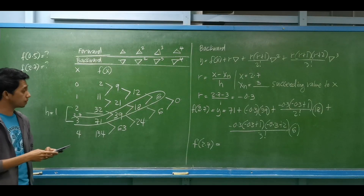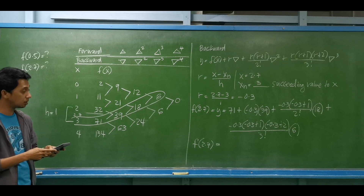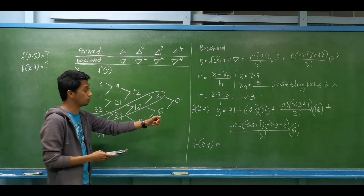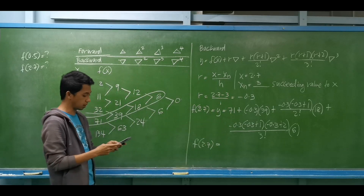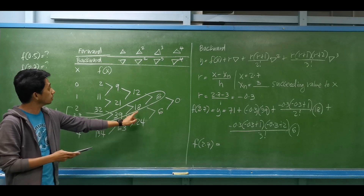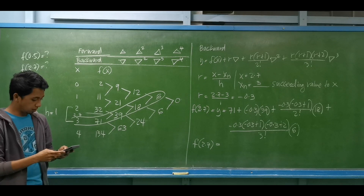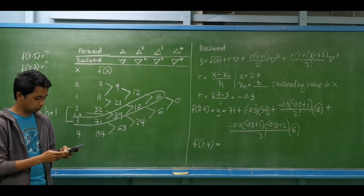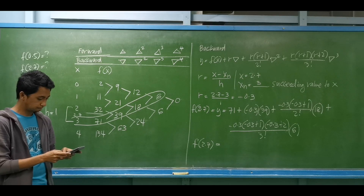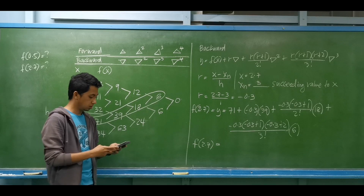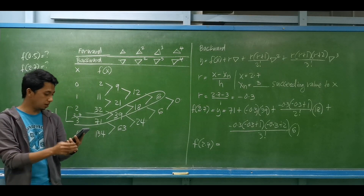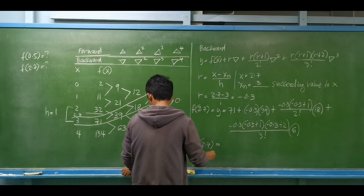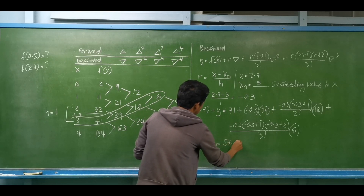Evaluating: f(2.7) = 71 + (−0.3)×39 + (−0.3)(0.7)/2 × 18 + (−0.3)(0.7)(1.7)/6 × 6. The difference between backward and forward is that in backward we add 1, while in forward we subtract. The value of f(2.7) is equal to 57.050.